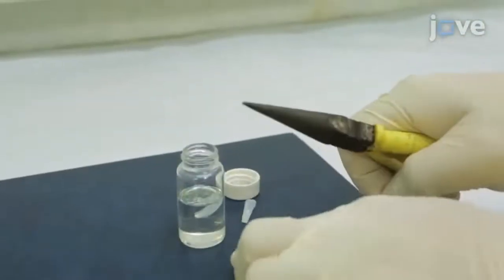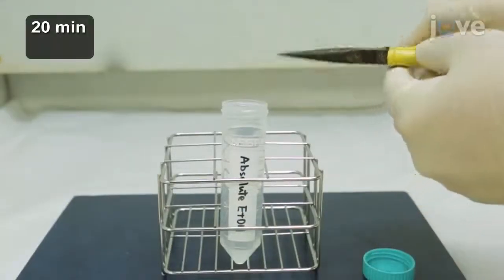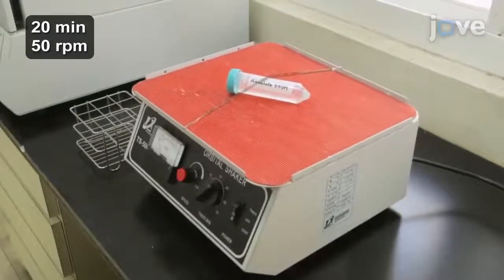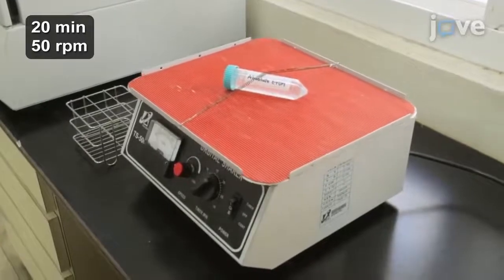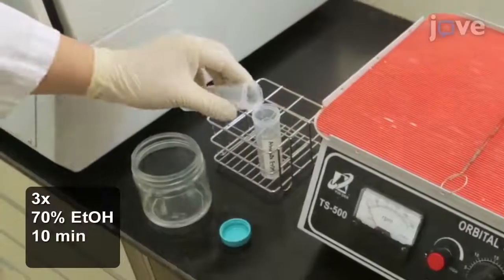Three days later, carefully remove the needles and wash them with absolute ethanol for 20 minutes with 50 RPM of agitation. Then, wash them three times in 70% ethanol for 10 minutes per wash.